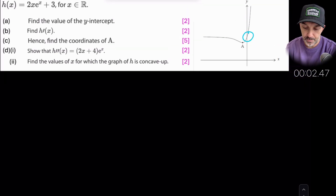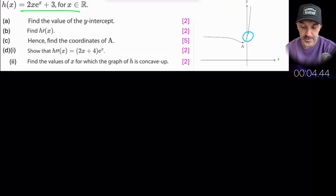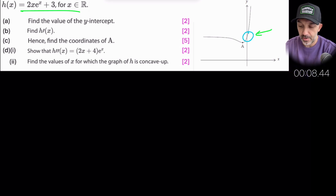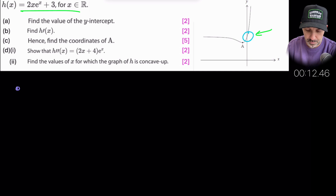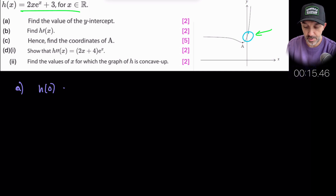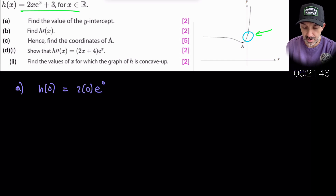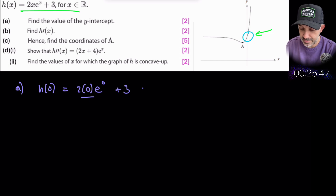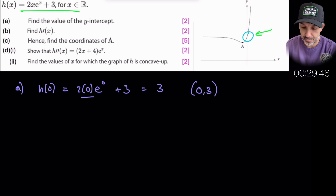So h(x) is given by this expression here. Find the value of the y-intercept. When we do that, we substitute x = 0 into this function. So part A is: what is h(0)? That whole expression becomes 0 — because we're multiplying through by 0 — plus 3. So the y-intercept is 3, and the coordinate is (0, 3).